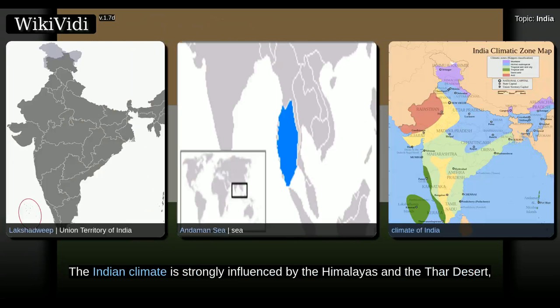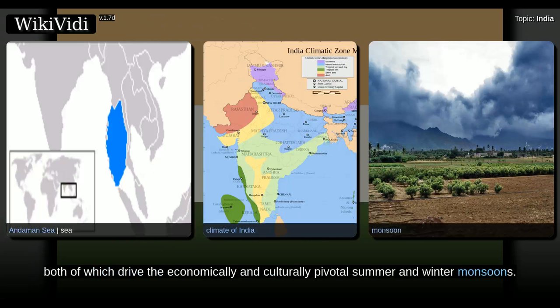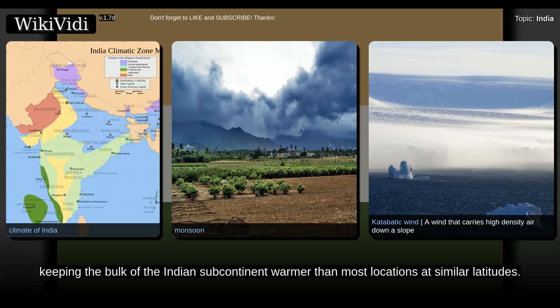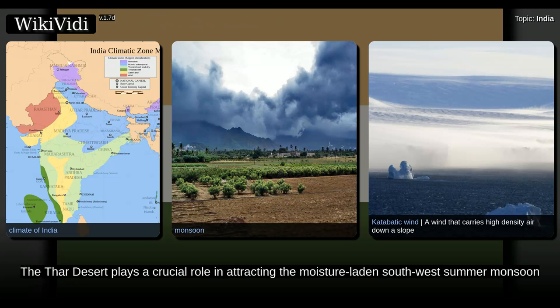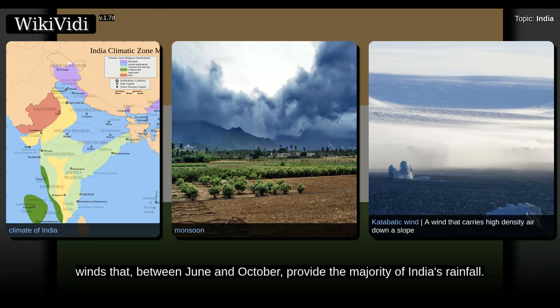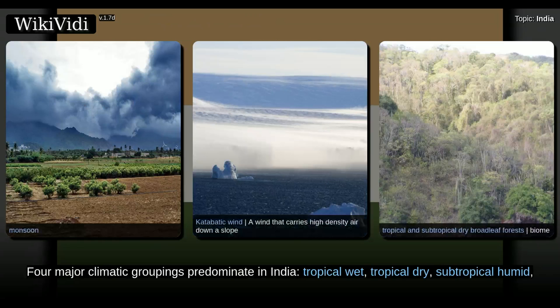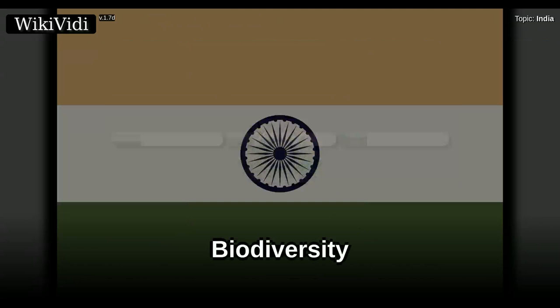The Indian climate is strongly influenced by the Himalayas and the Thar Desert, both of which drive the economically and culturally pivotal summer and winter monsoons. The Himalayas prevent cold Central Asian katabatic winds from blowing in, keeping the bulk of the Indian subcontinent warmer than most locations at similar latitudes. The Thar Desert plays a crucial role in attracting the moisture-laden southwest summer monsoon winds that, between June and October, provide the majority of India's rainfall. Four major climatic groupings predominate in India: tropical wet, tropical dry, subtropical humid, and montane.